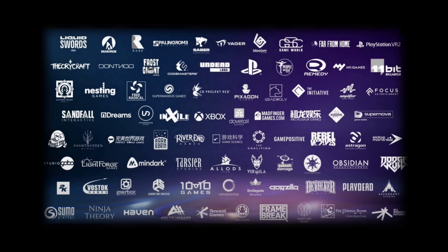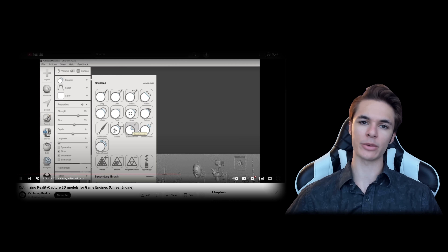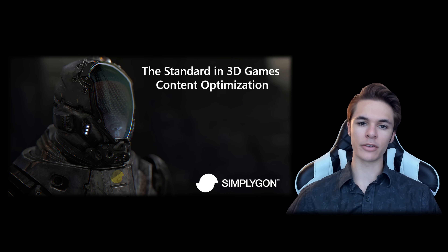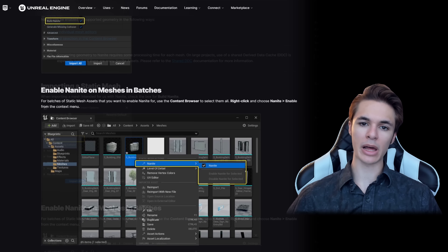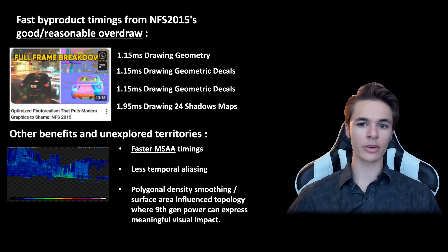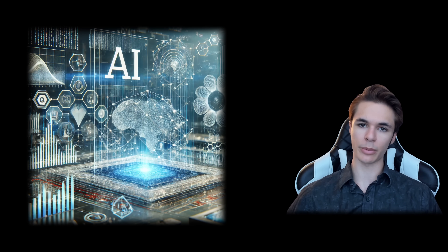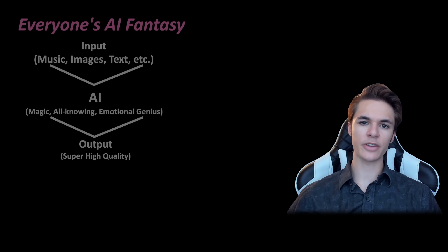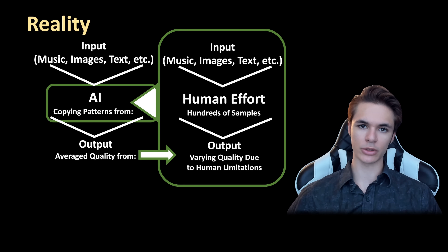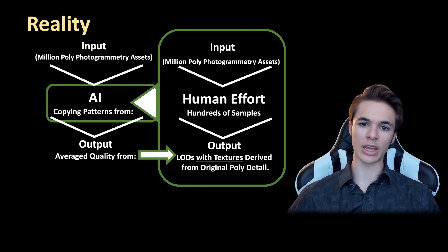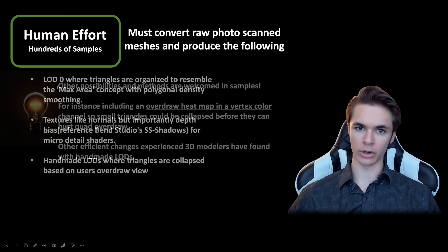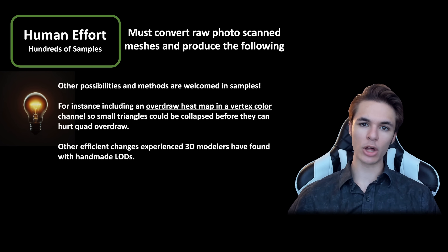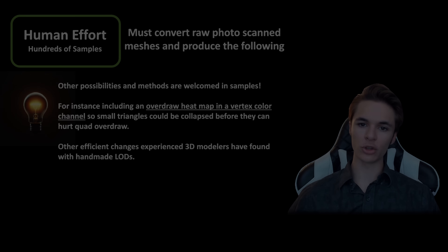We do not expect studios to spend hours of manual labor maximizing topology efficiency in million poly photogrammetry scans, or inspect models for optimum micro detail baking, or pay extra for higher quality LOD services. The only solution that can balance the simple efficiency studios get with Nanite and the performance offered by overdraw-contained scenery is an AI-trained solution for photogrammetry scan topology. What we need is a deep learning model that can analyze original photogrammetry scans — including topology following the maximum area concept, depth bias and normal maps derived from original microgeo detail, and LODs that collapse subpixel detail based on overdraw — and produce overdraw-friendly results that run faster than Nanite and look better than most cheap LODs.